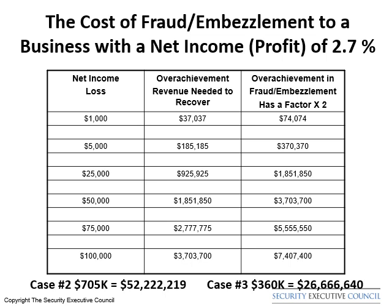Let's start with the Net Income Loss column. Illustrated here, from top to bottom, are losses in amounts of $1,000, $5,000, all the way down to $100,000. So let me illustrate the importance of this slide. Starting with the left column, if you look at the $1,000 line and go from right to left, you will note that it takes $37,037 of gross revenue to generate that $1,000 of profit. In this illustration, let's assume that the $1,000 was cash, or a computer, or a 46-inch high-def TV.